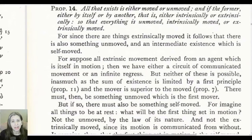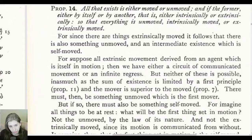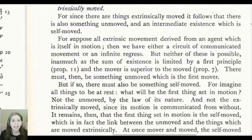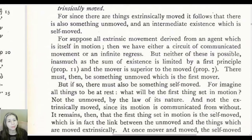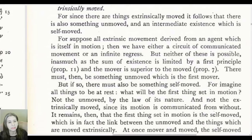Since there are things which are extrinsically moved — moved from outside themselves — it follows that there is also something that is unmoved, and an intermediate existence which is self-moved. So the ranking is: unmoved, self-moved, and then extrinsically moved. Suppose that all extrinsic movement derived from an agent which is itself in motion. Then we have either a circuit of communicated movement, like the limited circle from Proposition 11, or an infinite regress — also from Proposition 11. But we already saw that neither is possible, inasmuch as the sum of existence is limited by a first principle.